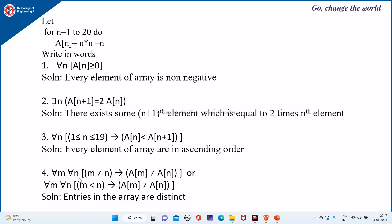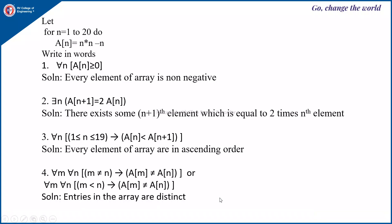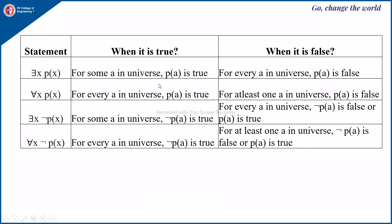Next: for all m, for all n, m ≠ n implies e(m) ≠ e(n); or for all m, for all n, m < n implies e(m) ≠ e(n). That means all the entries in the array are distinct.